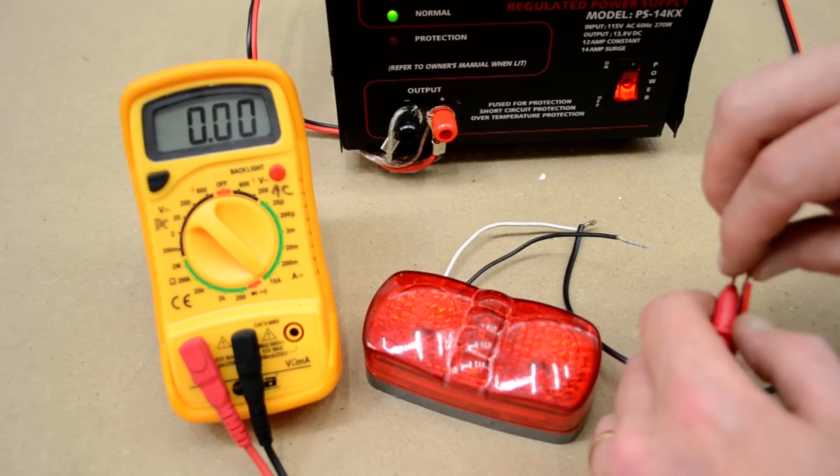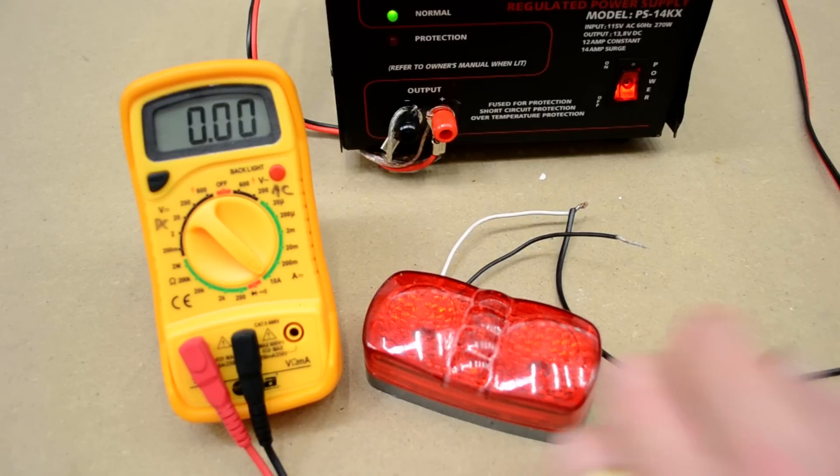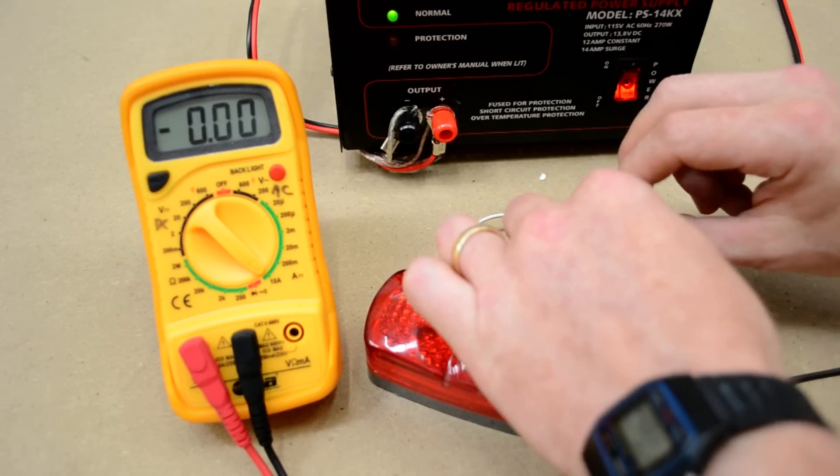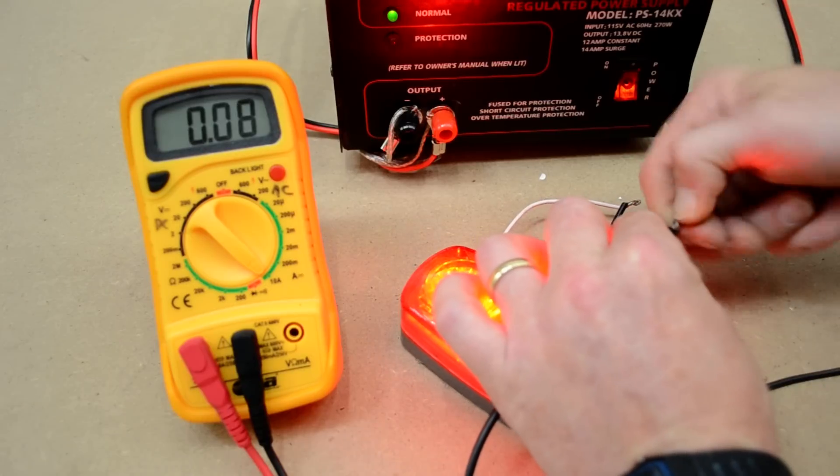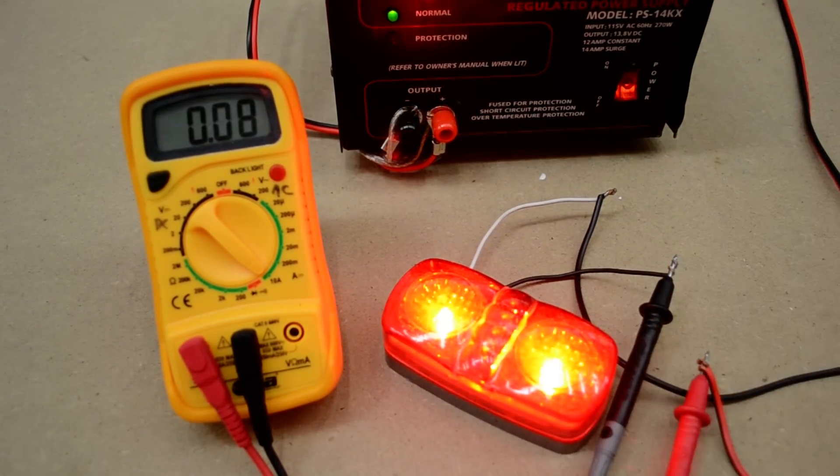Take the multimeter, interrupt that lead, and put one side to either end of the multimeter—it doesn't really matter. Connect the other one so the circuit closes. You can see the light is on.